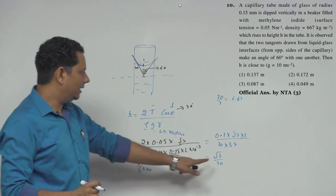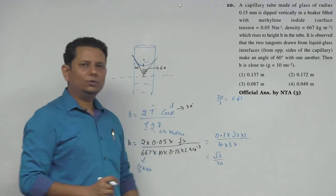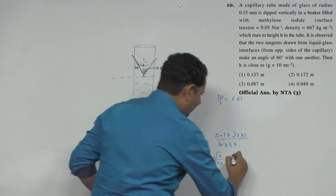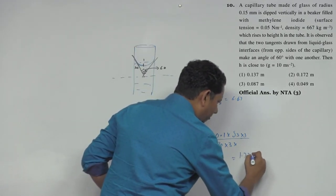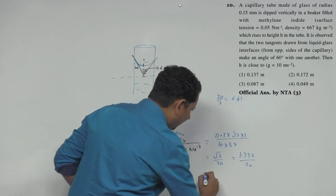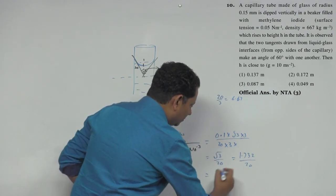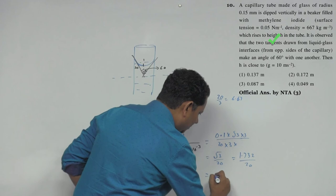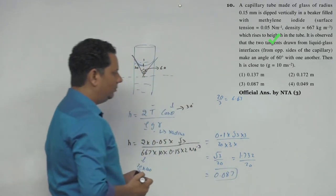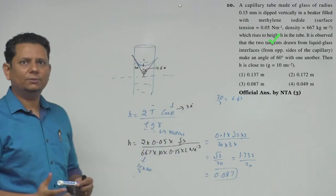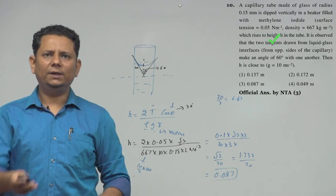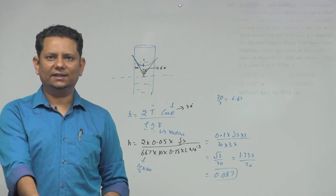The value of √3 = 1.732, so H = 1.732 / 20 ≈ 0.087 m. This is the final value. Based on this, option number 3 would be the closest correct answer.